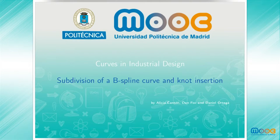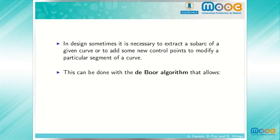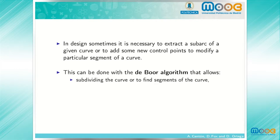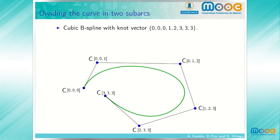Curves in industrial design: subdivision of a B-spline curve and knot insertion. In design, sometimes it is necessary to extract a sub-arc of a given curve or to add some new control points to modify a particular segment of a curve. This can be done with the DeVore algorithm, which allows subdividing the curve to find segments, adding knots and control vertices without changing the degree of the curve. Here we see an example of how to subdivide the curve into two sub-arcs.